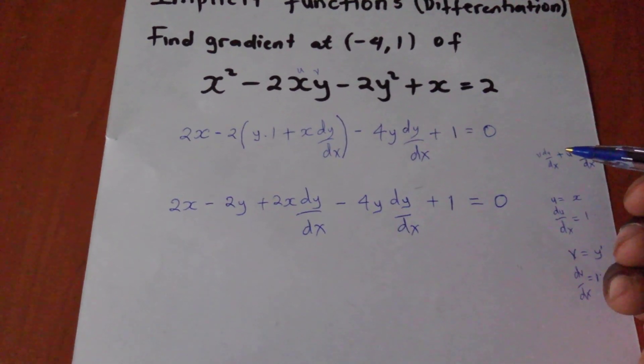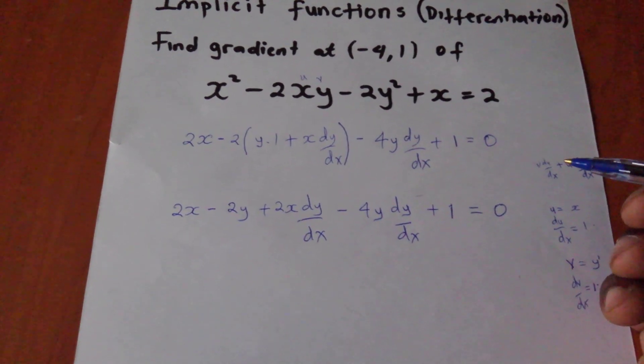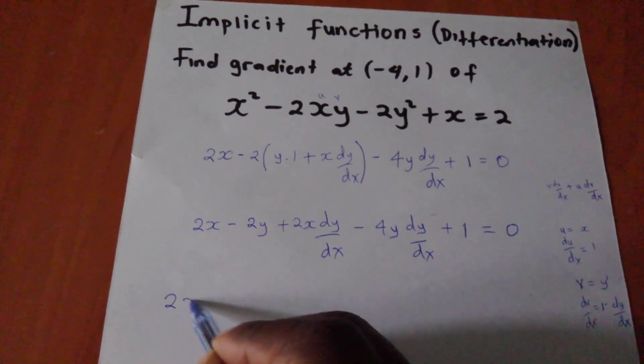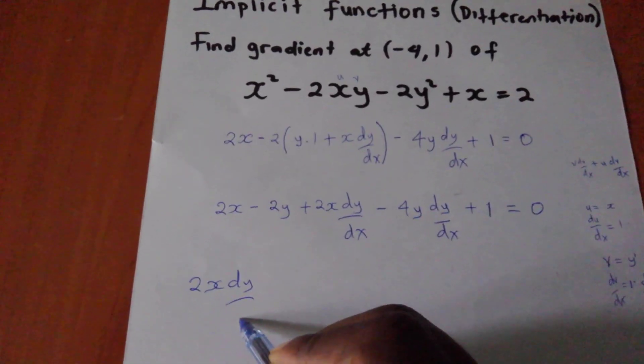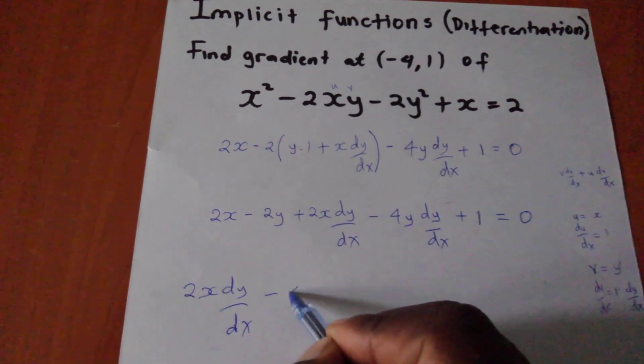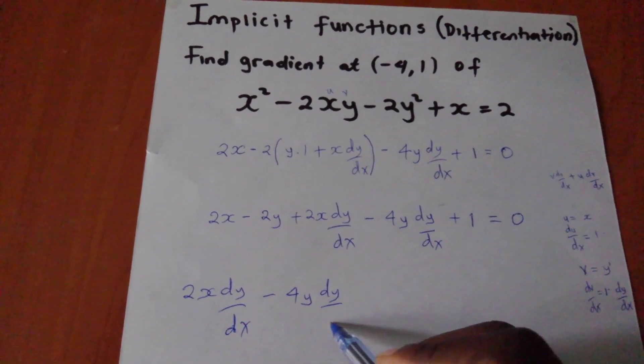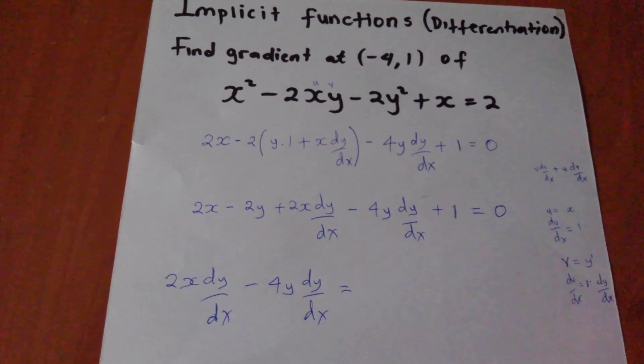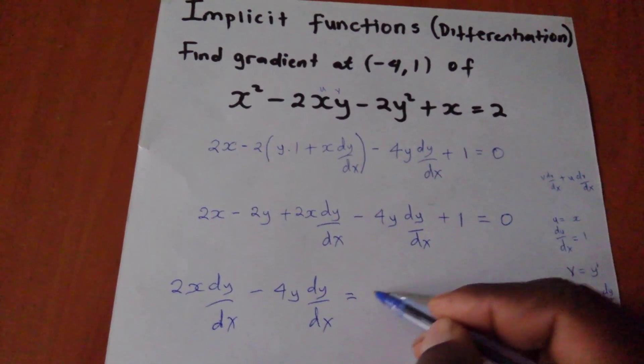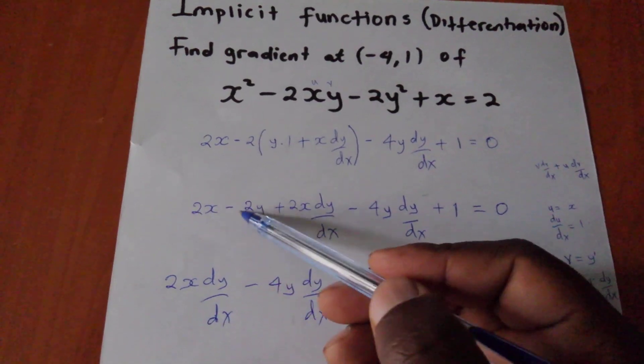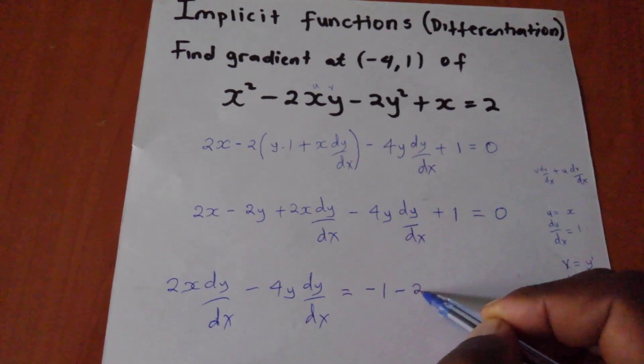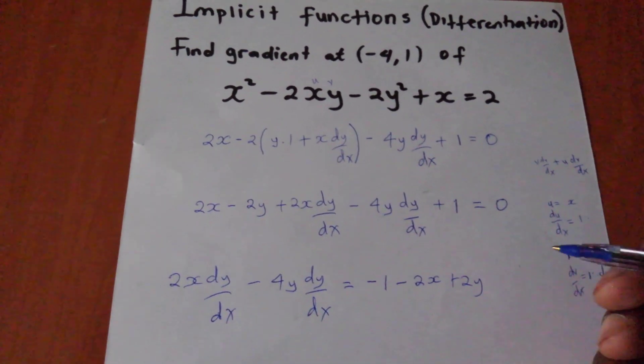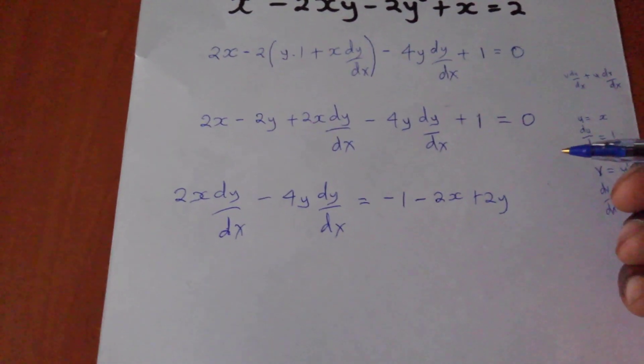So I am going to collect like terms. I am going to make sure this side I remain with the 2x dy dx minus 4y dy dx equal. I am going to push this one the other side of the equal sign. So it will become negative. Also these two. The 2x will become negative. And the negative 2y will become positive 2y. I hope we are still at par to this point.